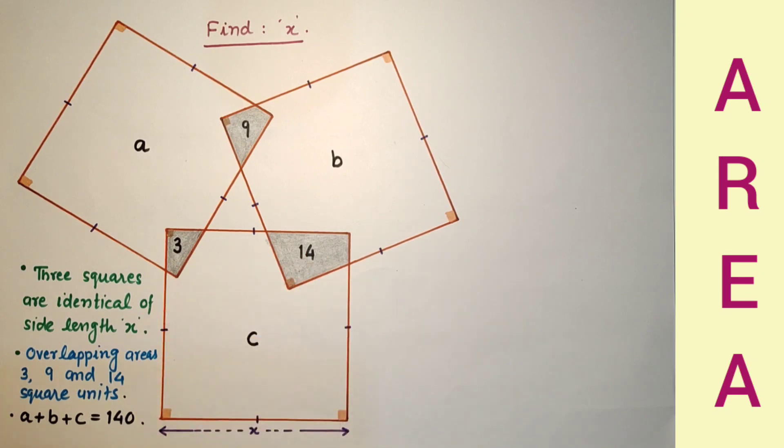The squares are identical, and we are given this information here: A plus B plus C equals 140.